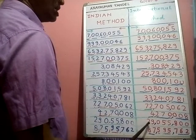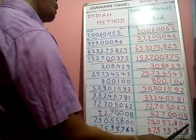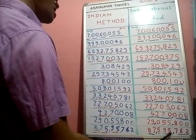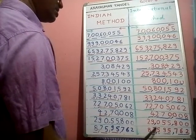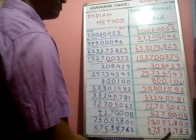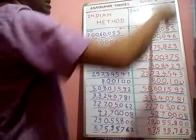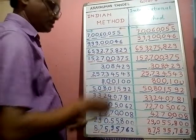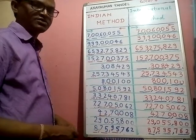Next one — ones, tens, hundreds, thousands, ten thousands, hundred thousands, millions, ten millions. We read: twenty-nine million fifty-five thousand eight hundred. Last one: eighty-seven million five hundred ninety-five thousand seven hundred sixty-two. That's the international method. Friends, subscribe to my channel. Bye!